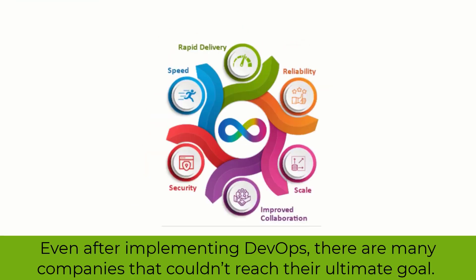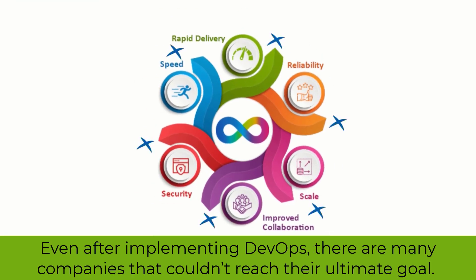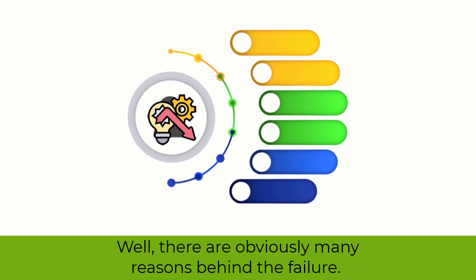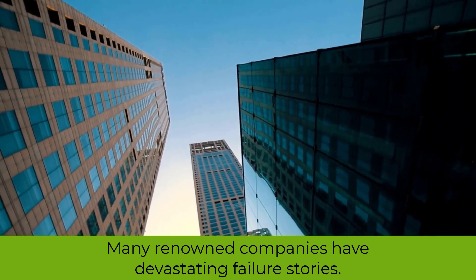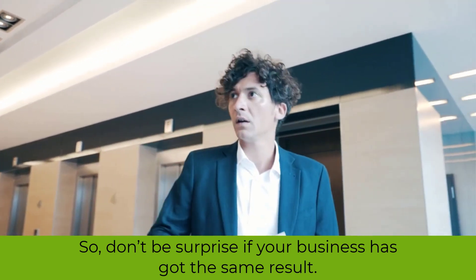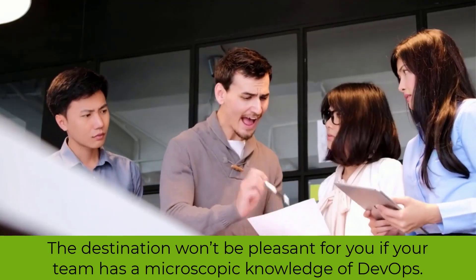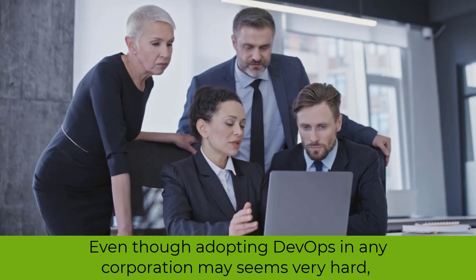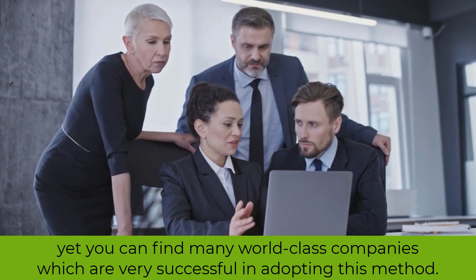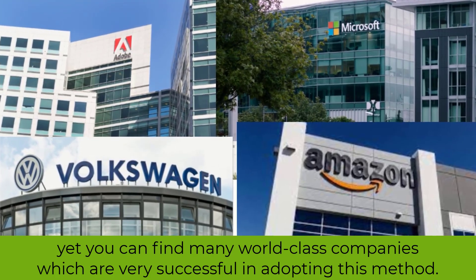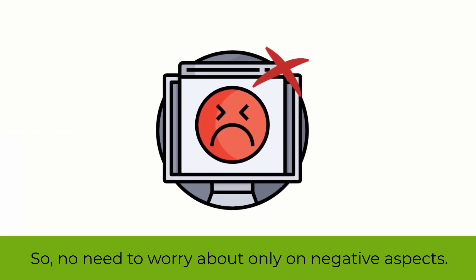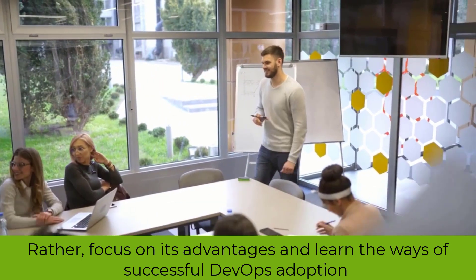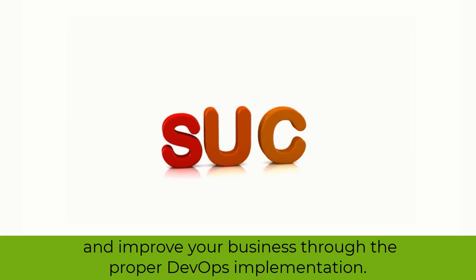Let us remind you of a fact. Even after implementing DevOps, there are many companies that couldn't reach their ultimate goal. There are obviously many reasons behind the failure. Many renowned companies have devastating failure stories, so don't be surprised if your business has got the same result. The destination won't be pleasant for you if your team has microscopic knowledge of DevOps. Even though adopting DevOps in any corporation may seem very hard, you can find many world-class companies which are very successful in adopting this method. So, no need to worry about negative aspects. Rather, focus on its advantages and learn the ways of successful DevOps adoption and improve your business through proper DevOps implementation.